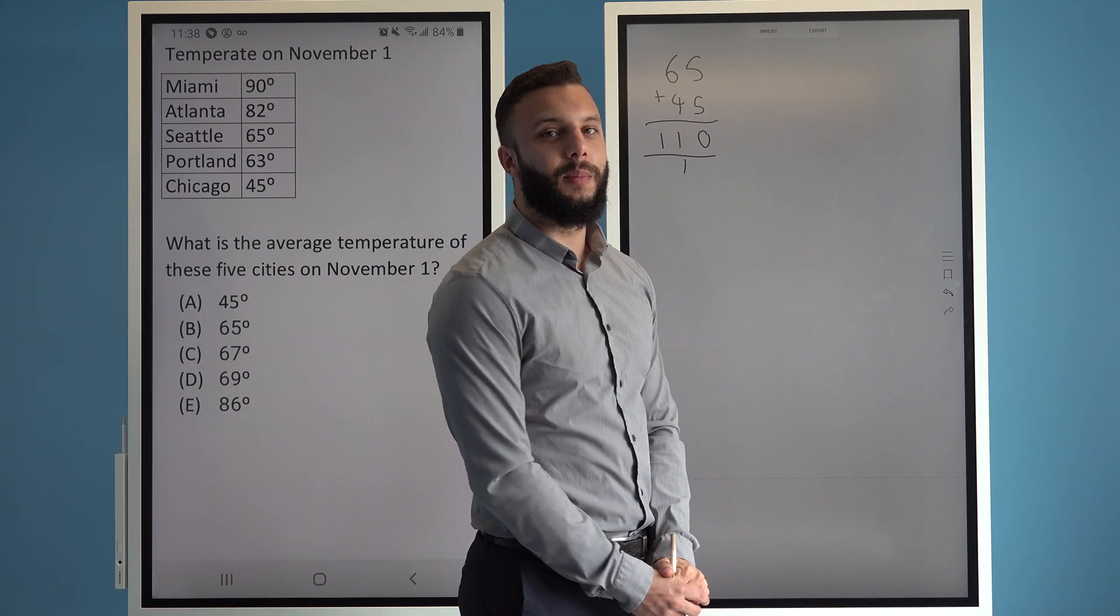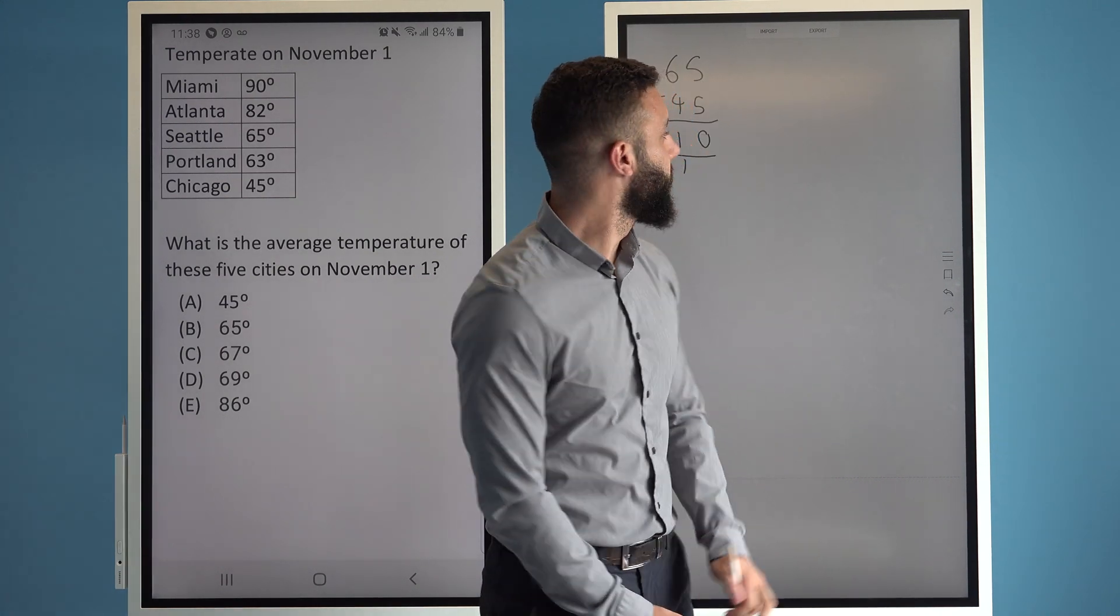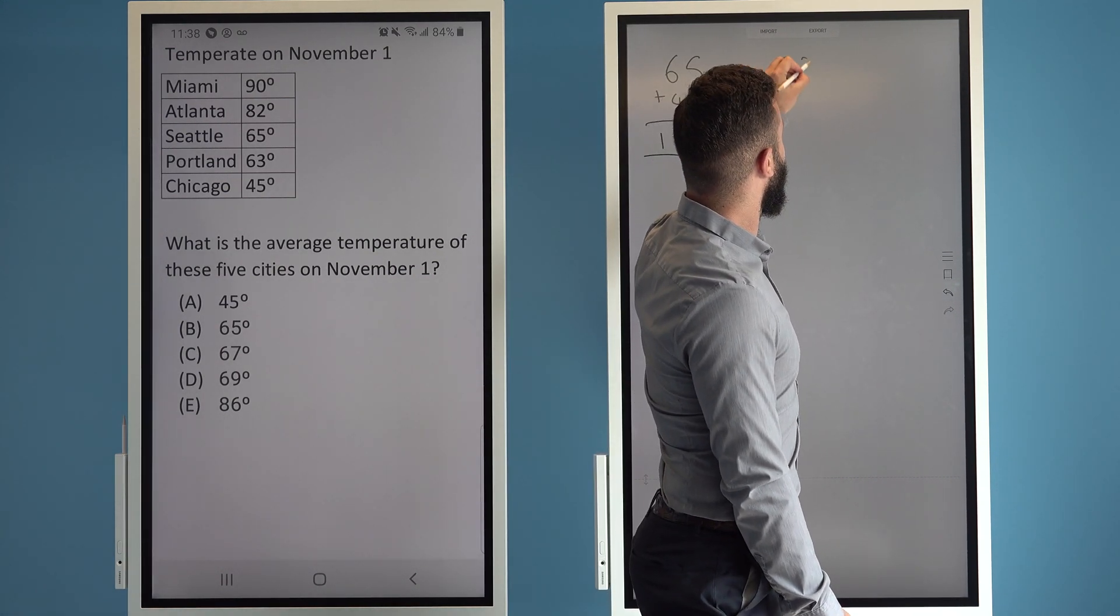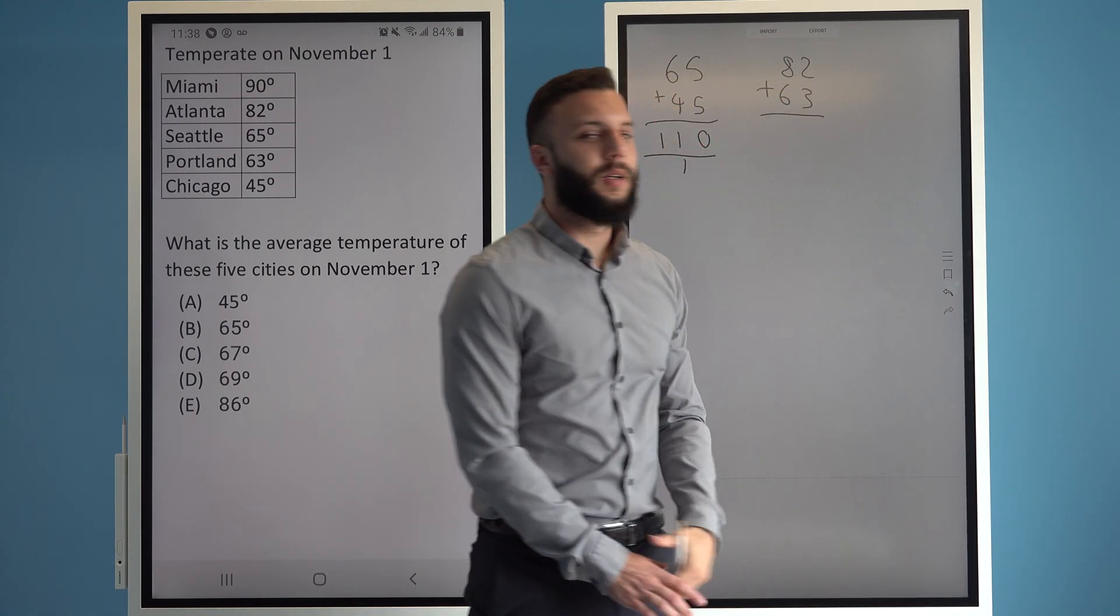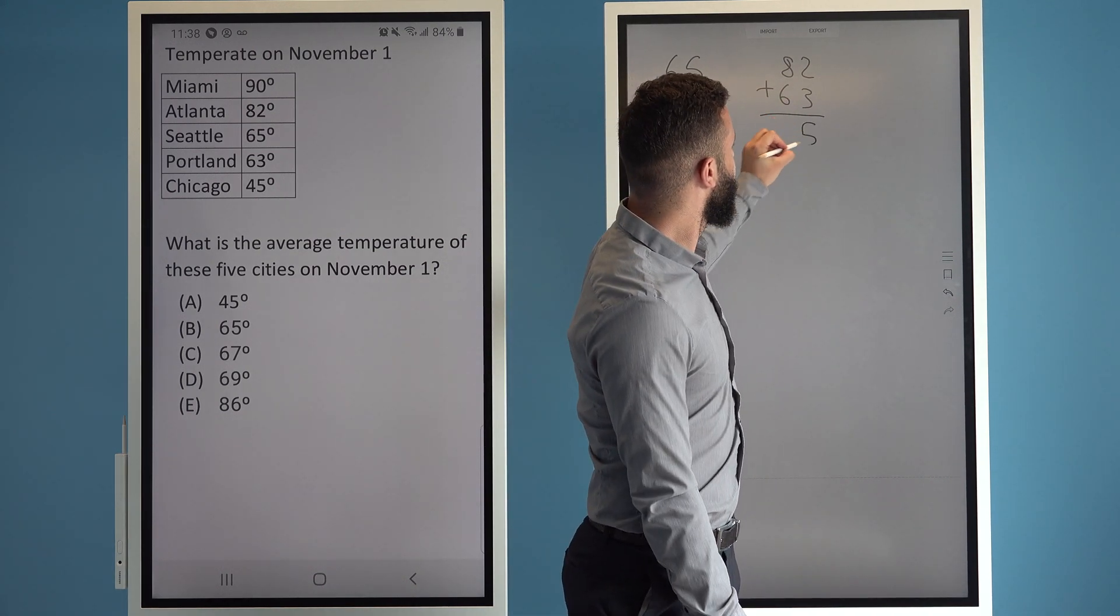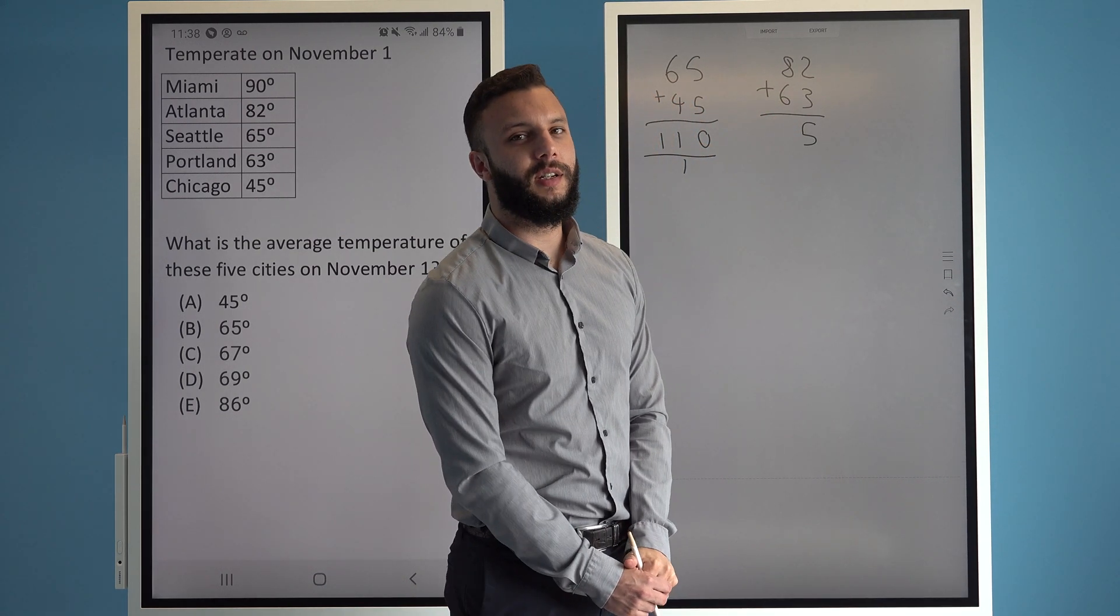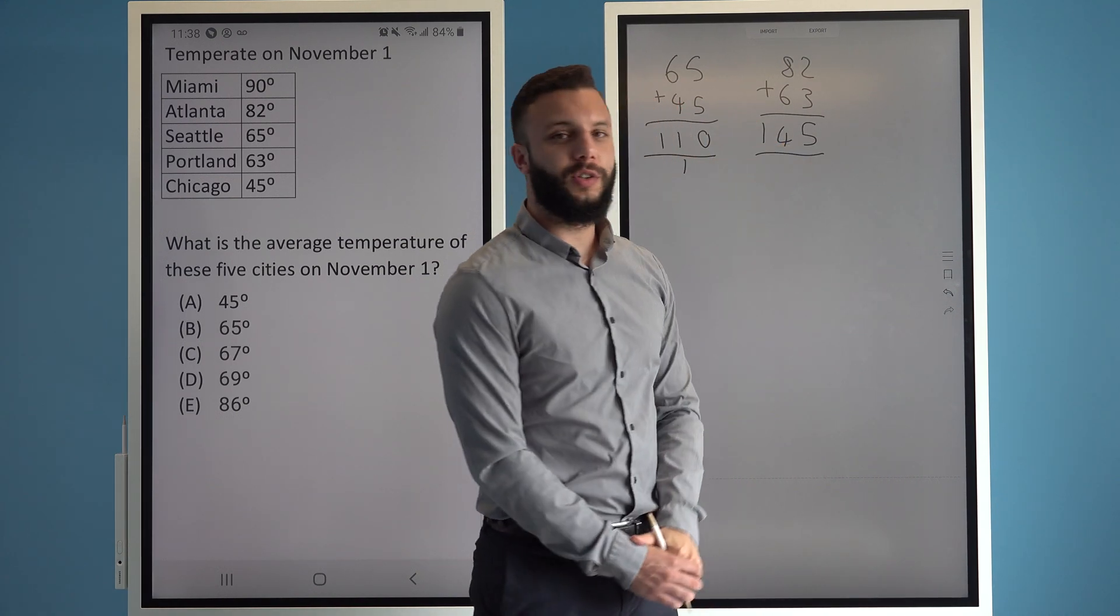The next two numbers I'm going to add together are 82 and 63. 2 plus 3 gives me 5. 8 plus 6 gives me 14, so 145.